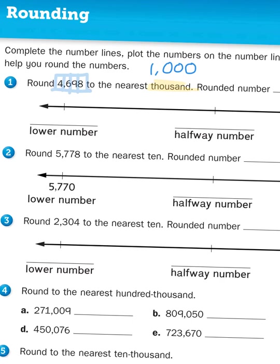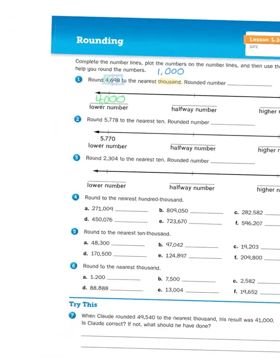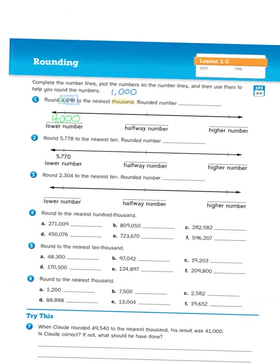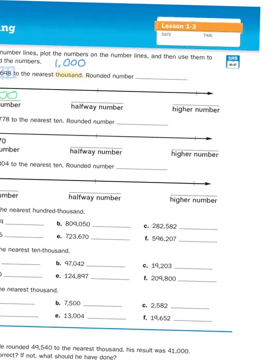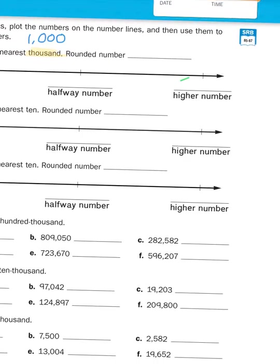I need to think about between what two groups of thousands does 4,698 live. So I start with the number in the thousandths place value — that's 4. So I know that it's at least as big as 4,000. I'm going to write 4,000 here in this space where it says lower number. What comes after four? Of course it's five, so I'm going to put 5,000 over here.